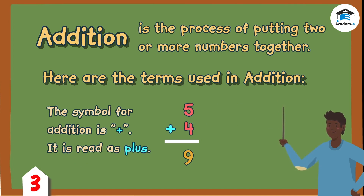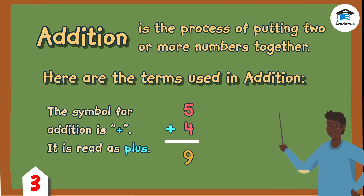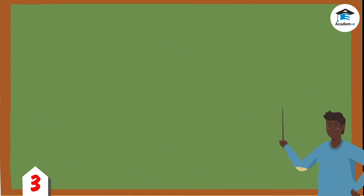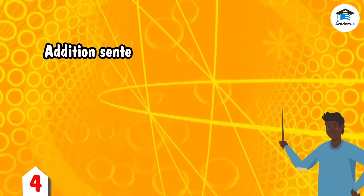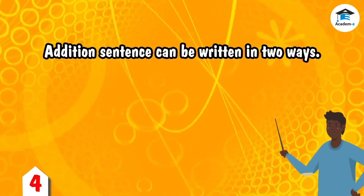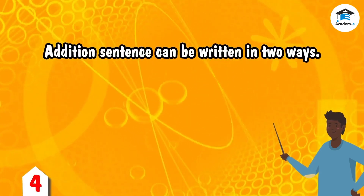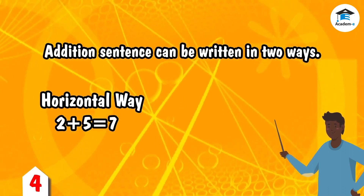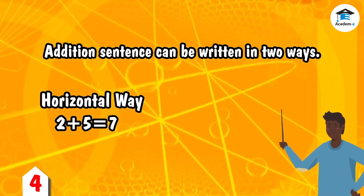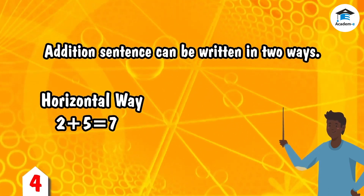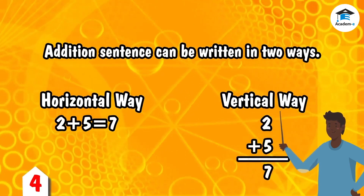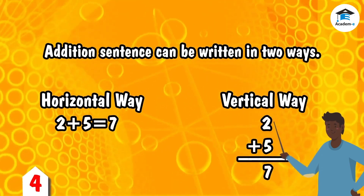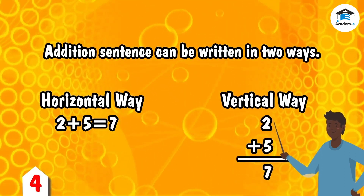The symbol for addition is '+', it is read as 'plus'. An addition sentence can be written in two ways: horizontal way — 2 plus 5 equals 7; vertical way — 2 plus 5 equals 7.